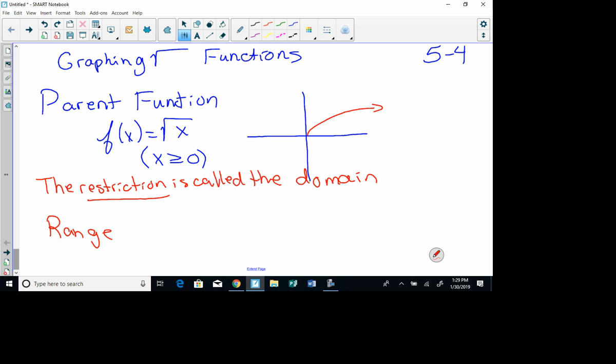What about our range? Look at the graph up and down. What's the lowest value that y, this is our y axis, could be? Zero. So y also has to be what? Greater than 0, right? It has to be greater than 0. So for the range, y also has to be greater than or equal to 0. Now there's some things that we can do to change this graph a little bit.